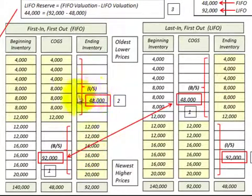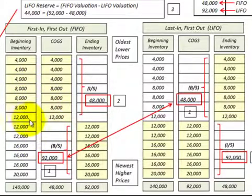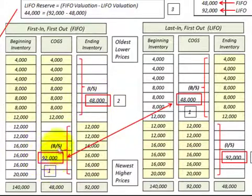Let's look at FIFO first. This is where we use our oldest inventory first, which is our lower priced inventory. In this case, we used $48,000 worth of inventory, which would be recorded as our cost of goods sold on our income statement. So our ending inventory would be our beginning inventory of $140,000 less the $48,000 used, giving us an ending inventory of $92,000 on our balance sheet.